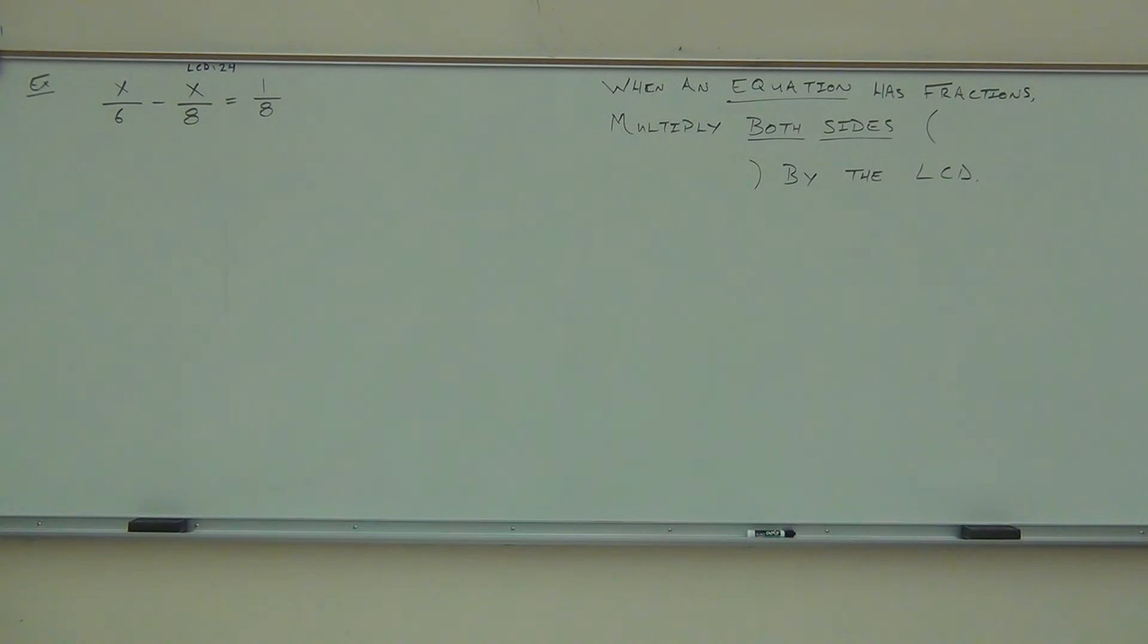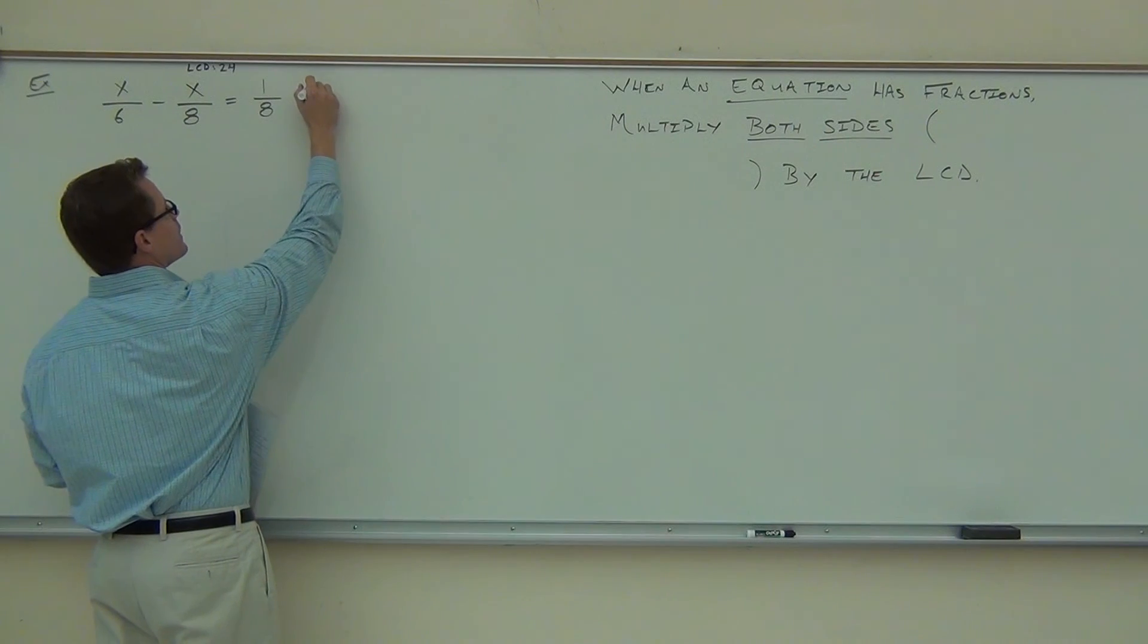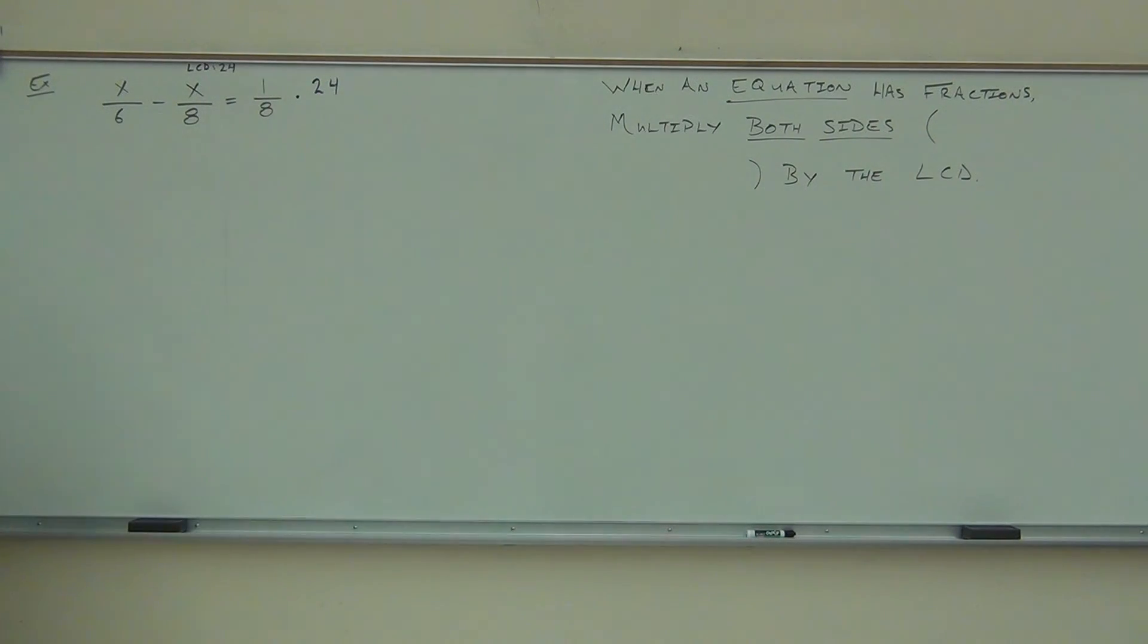What we're going to do up here is we're going to write LCD is 24. And what I said is we're going to multiply both sides by the LCD. Let's try that. Do I mean LCD over LCD or just LCD? Just LCD. Watch what happens. If we multiply the right-hand side by our LCD, so times 24, and I multiply the left-hand side by 24, first of all, can somebody tell me what's not quite right about this, the way it is right now?